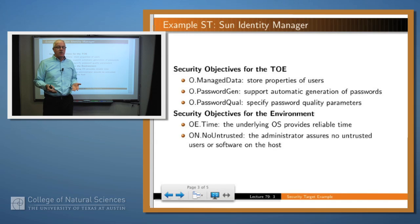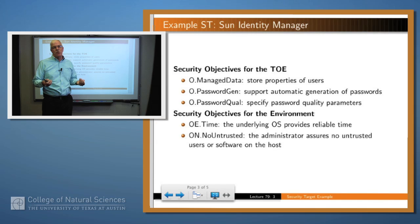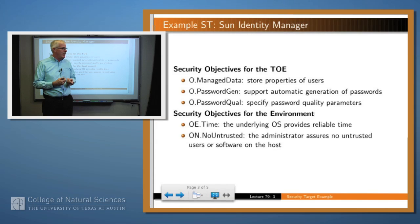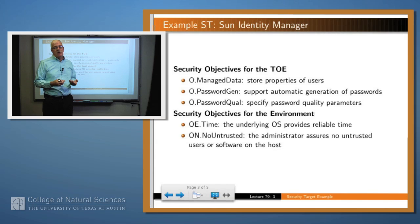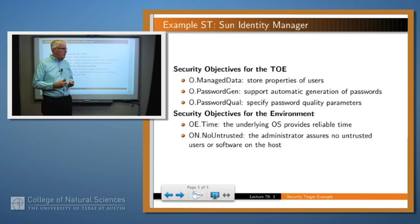There were security objectives, just as we saw for the protection profile. Manage data. Store properties of users — that's what this system is really trying to do, since it's an identity manager system. Password generation: it supports the automatic generation of passwords. And password quality: passwords have to be of a certain length and have to be unpronounceable or similar constraints.